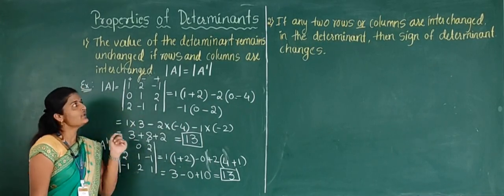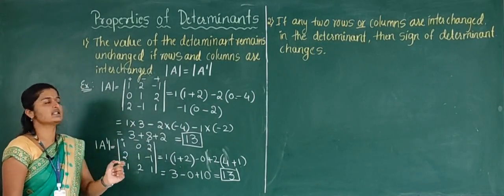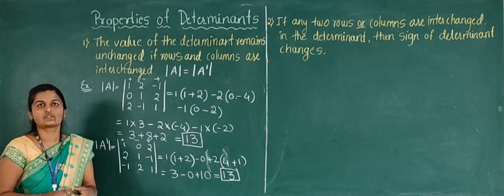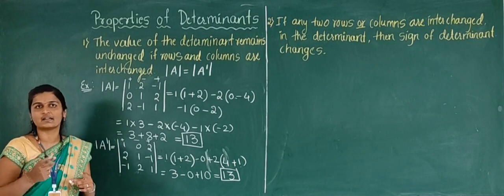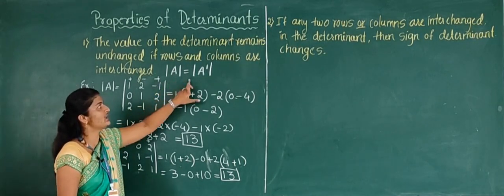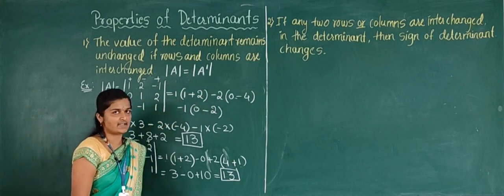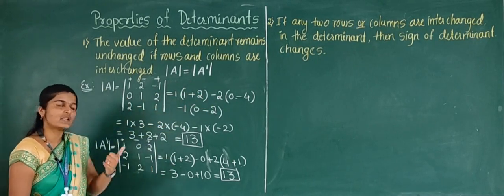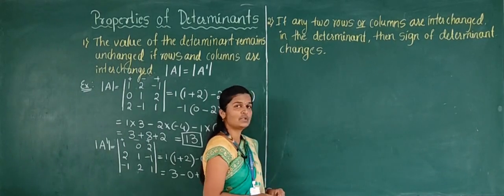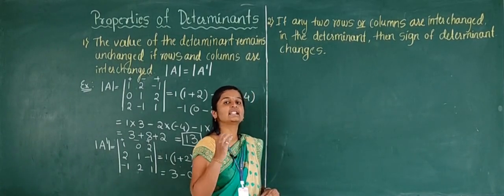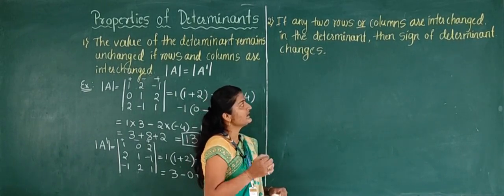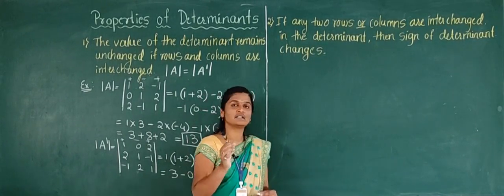So the first property is confirmed: the value of the determinant remains unchanged if rows and columns are interchanged, meaning det(A) = det(Aᵀ). Now I will move to the second property: if any two rows or columns are interchanged, then the sign of the determinant changes.